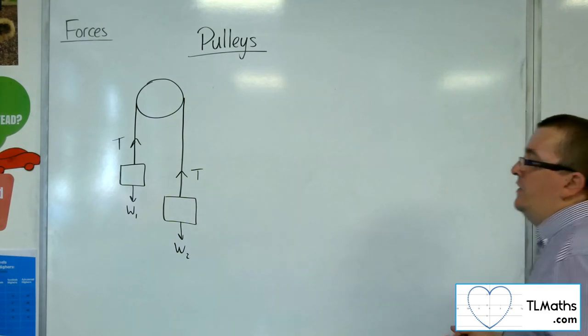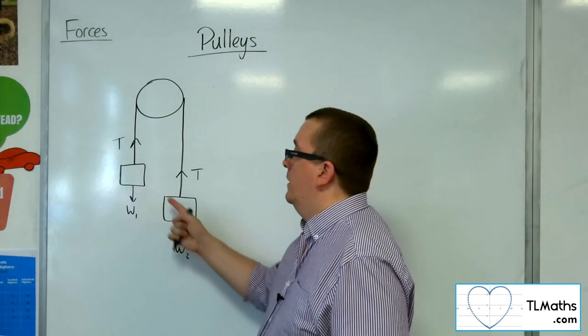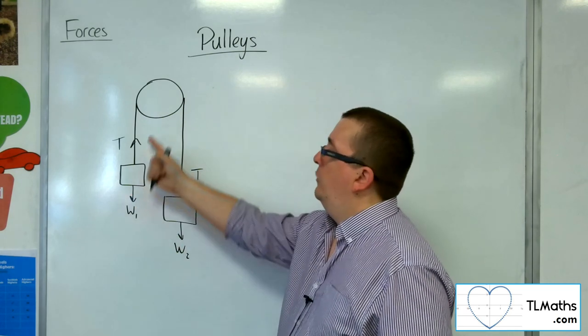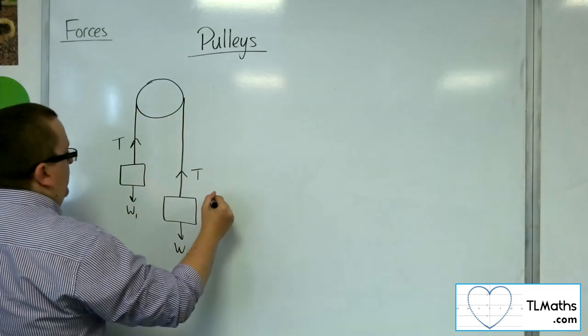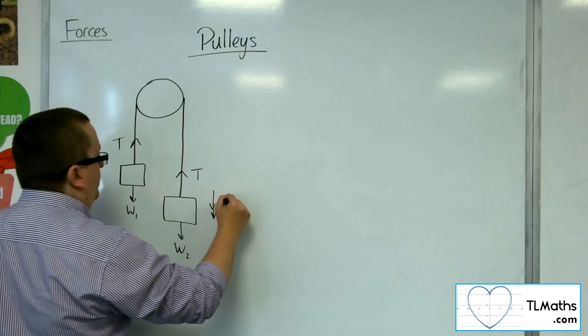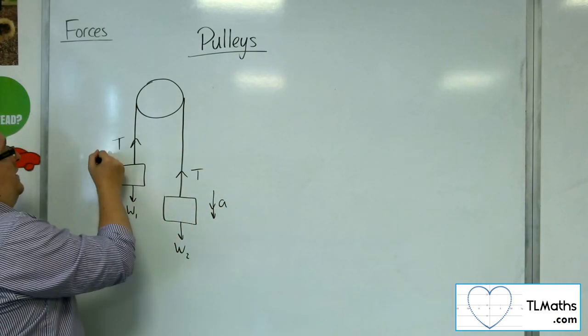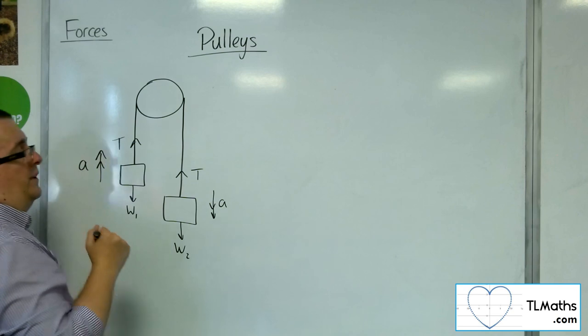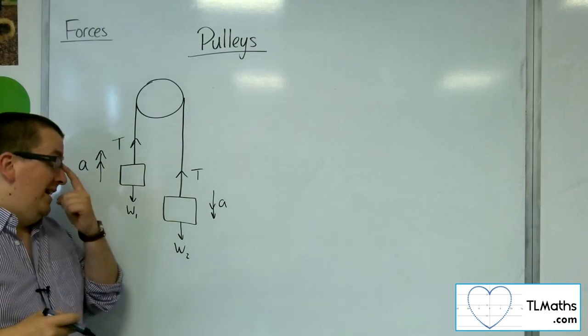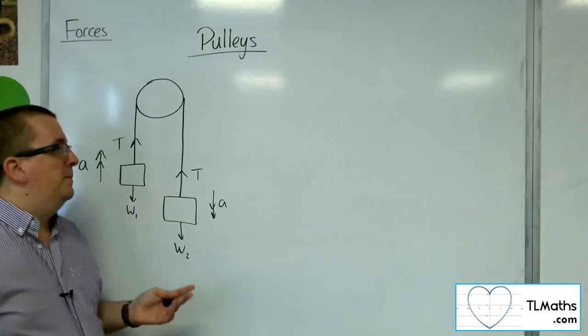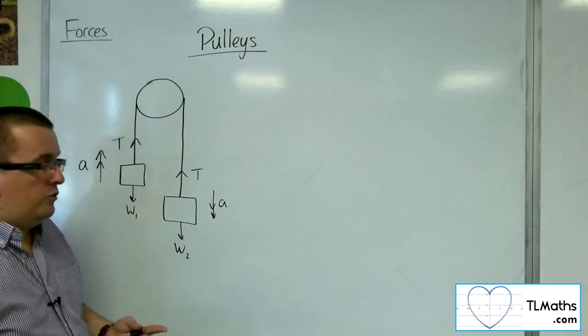So if this particle is heavier than that one, then this will move downwards, this will move upwards, so this would accelerate downwards with acceleration of A, and this one will accelerate upwards with acceleration of A. And our job would be to find the acceleration of the system, the tension in the string.